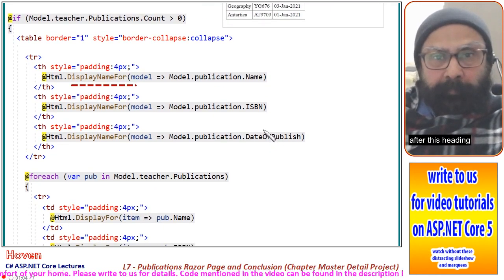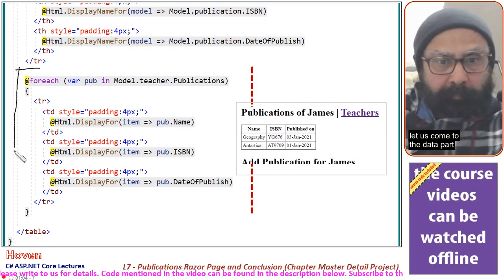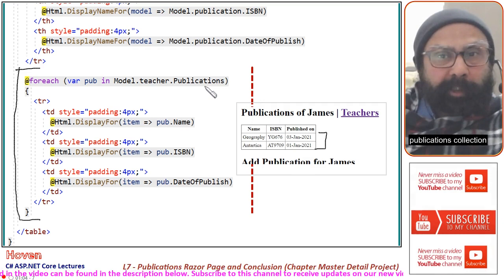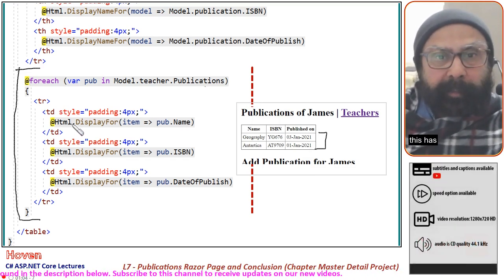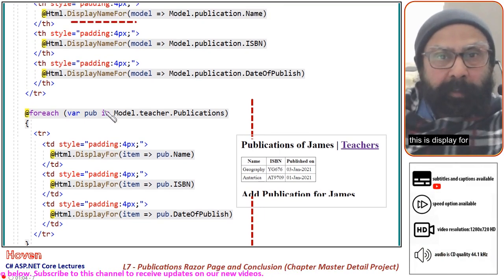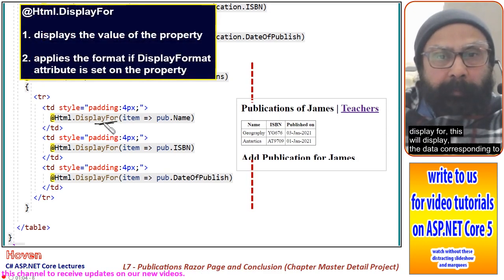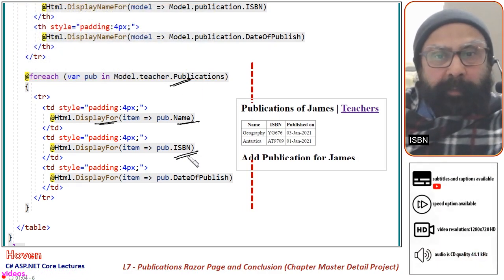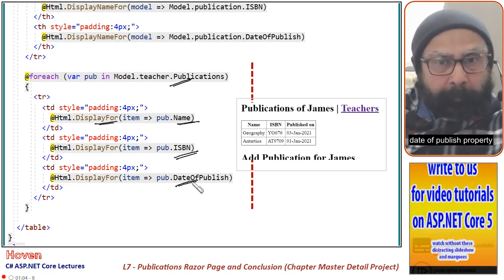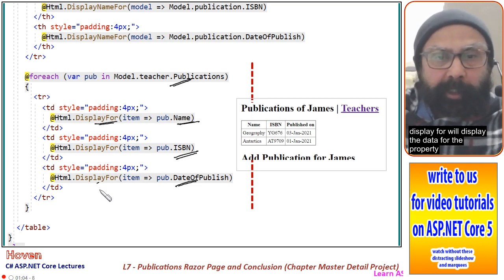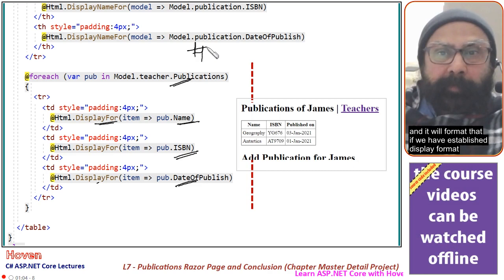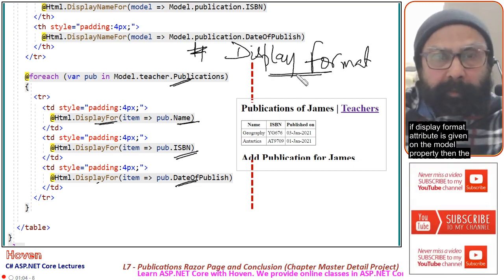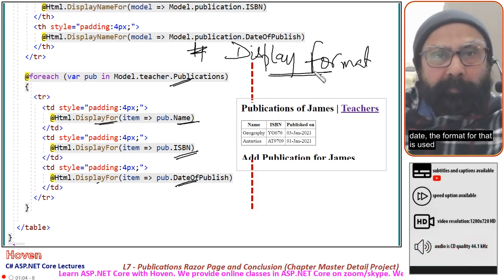After this heading, let us come to the data part. We run a foreach loop on the model.teacher.publications collection. This tr has html.displayFor. DisplayFor will display the data corresponding to the name property, the value of the ISBN property, and the DatePublished property. DisplayFor will display the data for the property and format it if we have established a displayFormat attribute. If displayFormat is given on the model property, then that format is used.